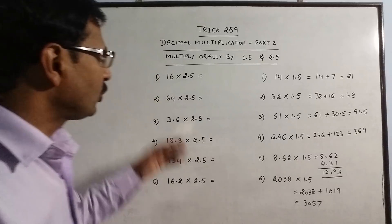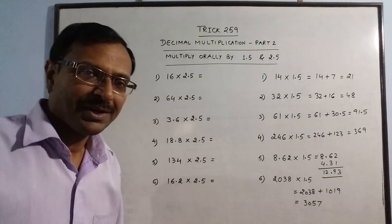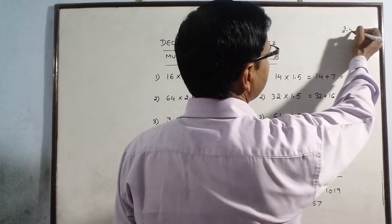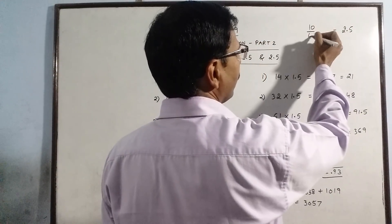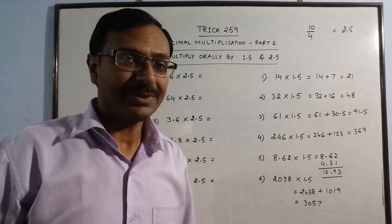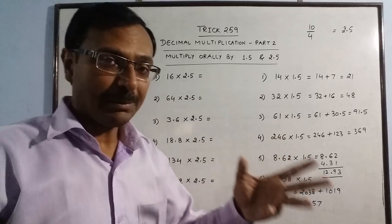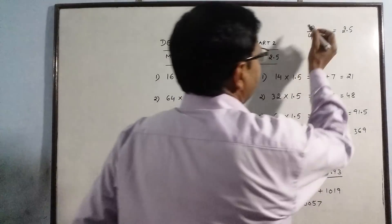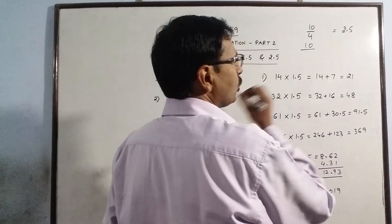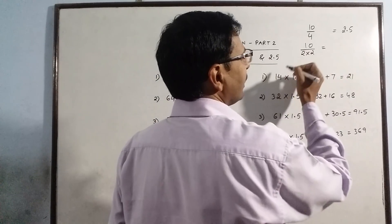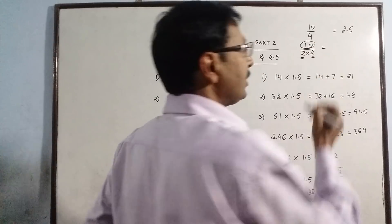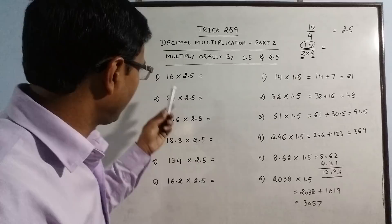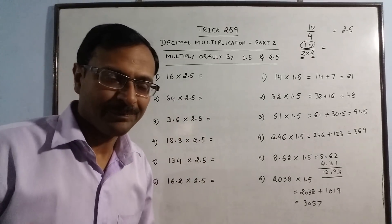Now, 2.5 multiplication by 2.5. Again, very simple mathematics rule. What is 2.5? See, actually 2.5 is 10 divided by 4. If you know this concept, 10 divided by 4, then multiplication by 2.5 can be done orally. What you do is, if you break down 4 into 2 parts, 2 into 2, so this is actually multiplying a number by 10 and then dividing it 2 times by 2.